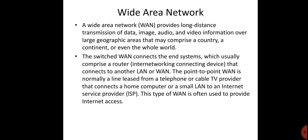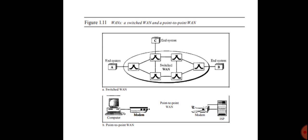The third category is the Wide Area Network. A Wide Area Network provides long distance transmission of data, voice, image, and video information over large geographical areas that may comprise a country, continent, or even the whole world. A WAN that is wholly owned and used by a single company is often referred to as an enterprise network.